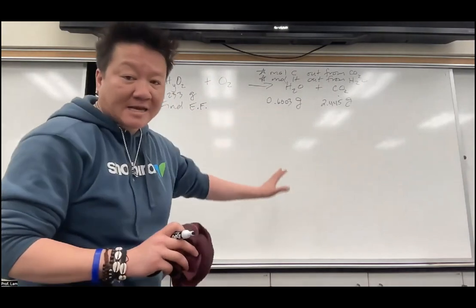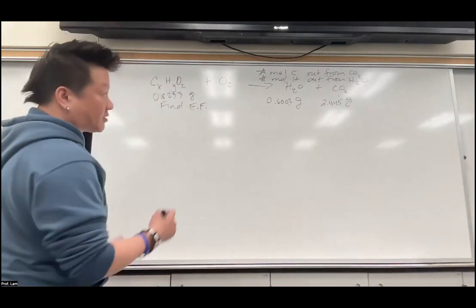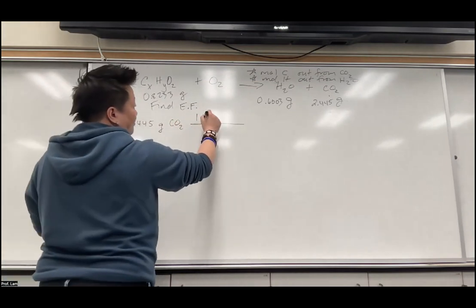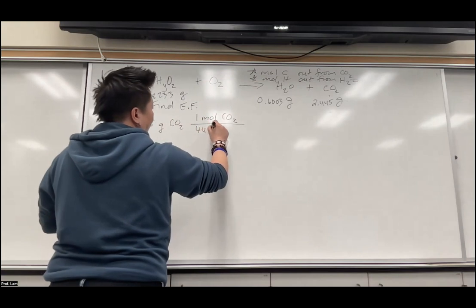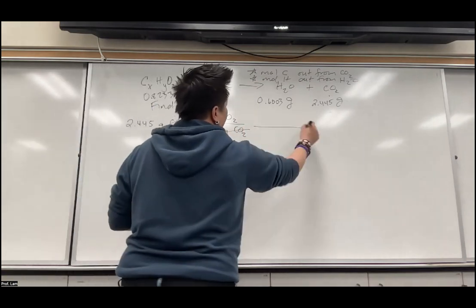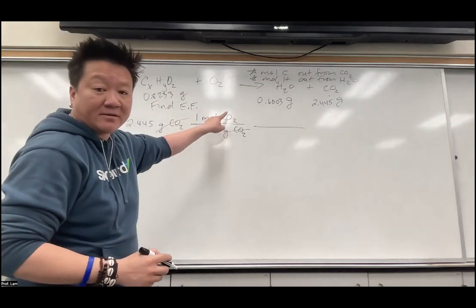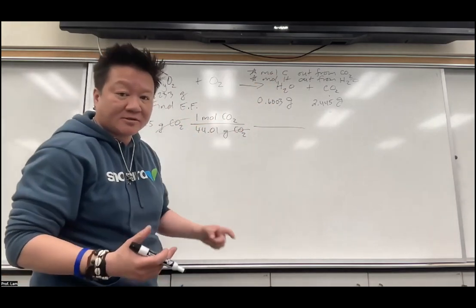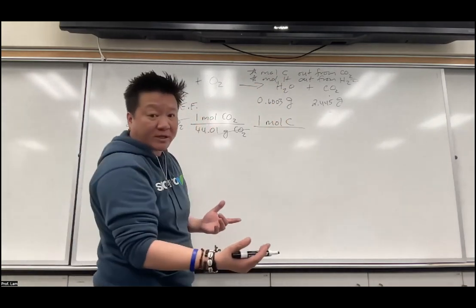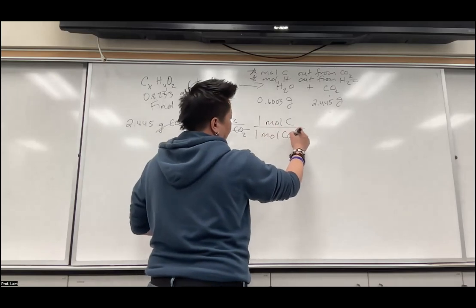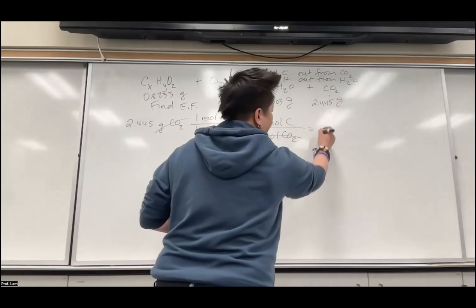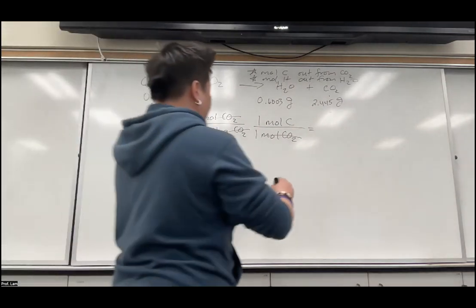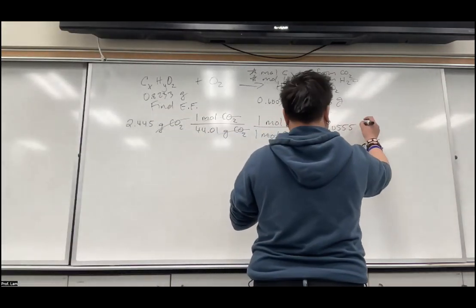Just like before, take the gram numbers and convert to moles. Starting with 2.445 grams of CO2: one mole of CO2 over 44.01 grams of CO2. We need moles of carbon out of it — there is one carbon in CO2, so one mole of carbon per mole of CO2. Keep four sig figs: that gives 0.05556 moles of carbon.